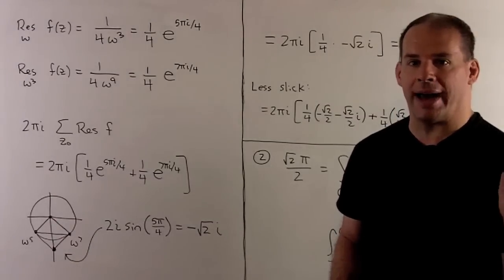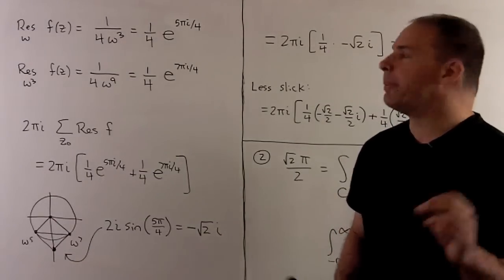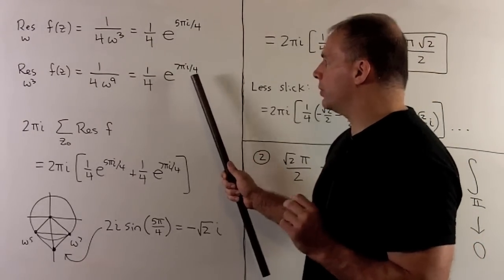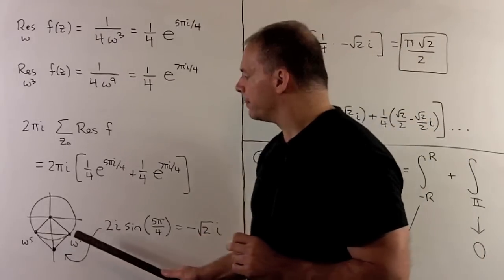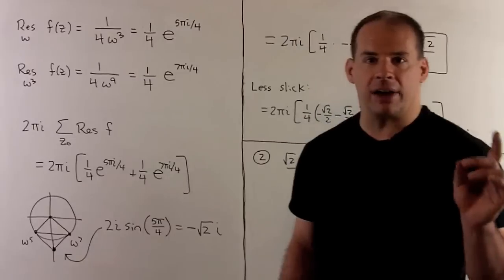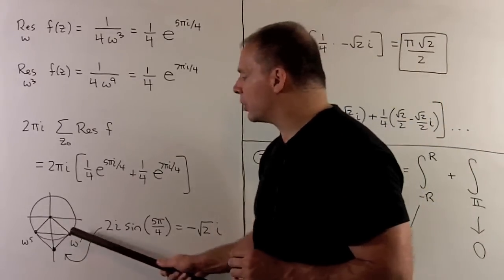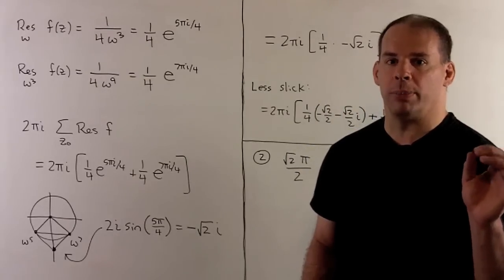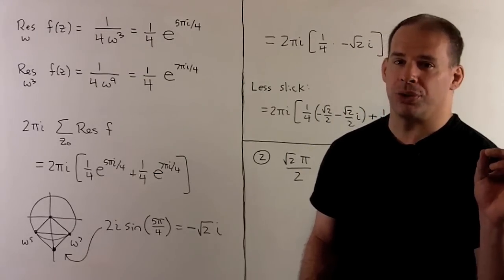Now, we want to add these together, multiply by 2 pi i. Let's start by just adding the parts that are in the unit circle. So, if we do this, I have omega to the fifth, omega to the seventh. We add them as vectors. So, this sum is going to wind up on the imaginary axis, which means it's a real multiple of i.